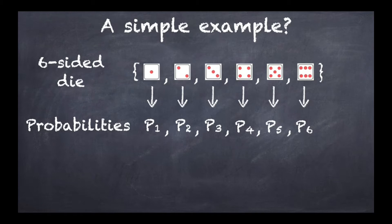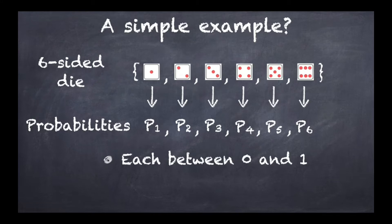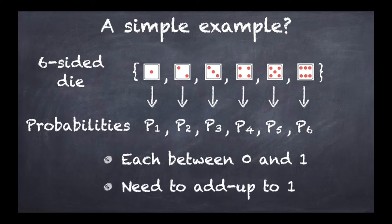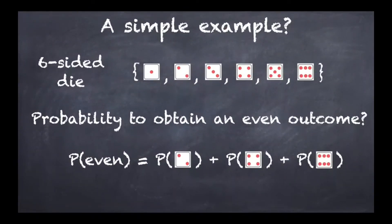Classical probability theory demands that p1, p2, p3, p4, p5, p6 are real numbers which are each between 0 and 1, and that the sum of these probabilities adds up to 1. One thing we can look at is what happens if we want to calculate the probability of obtaining an even outcome. The probability of an even outcome is the probability of finding 2, plus the probability of finding 4, plus the probability of finding 6 — we add up the probabilities.